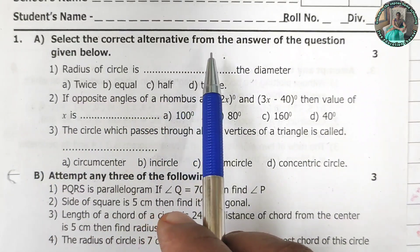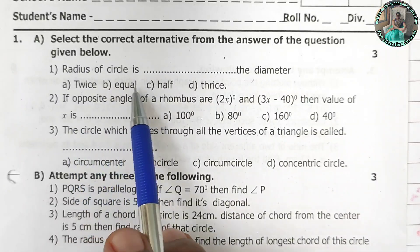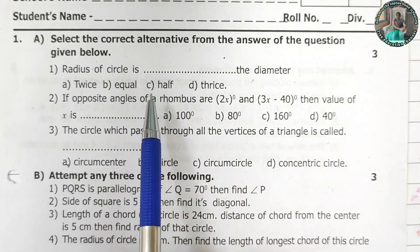Question 1a. Select the correct alternative from the answer of the question given below. Radius of a circle is dash dash the diameter. Radius is half diameter.